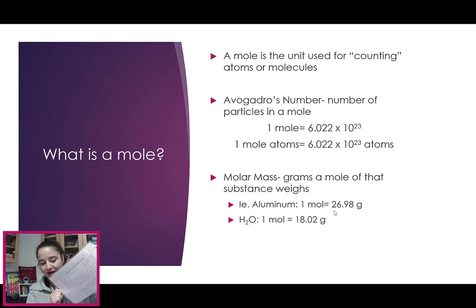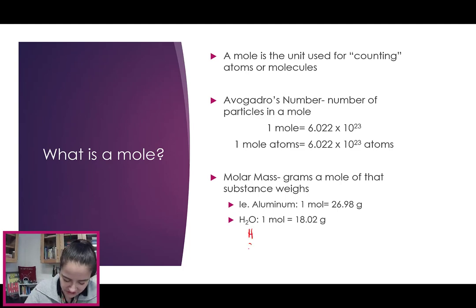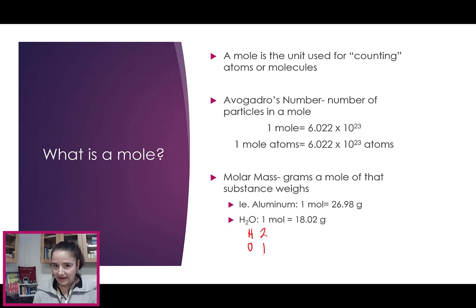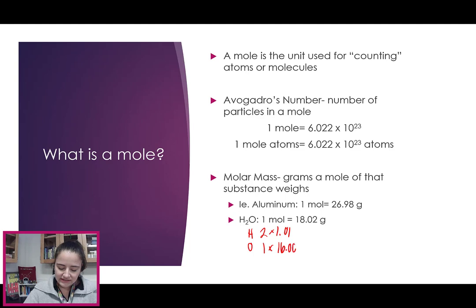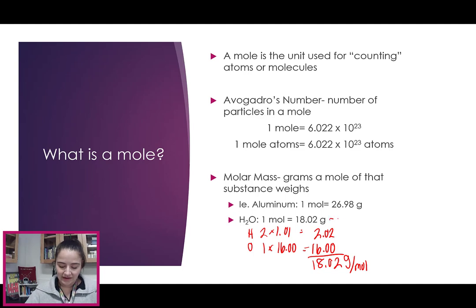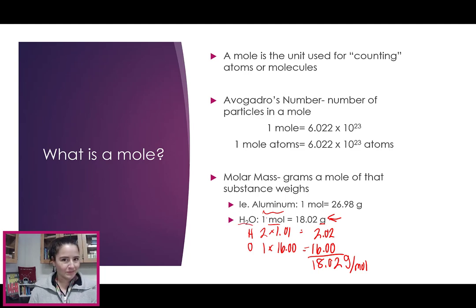How we find those is with the periodic table. For example, for H₂O, we have hydrogen and oxygen — two atoms of hydrogen, one atom of oxygen — and the masses of the atoms come from the periodic table. Hydrogen has a mass of 1.008, or about 1.01. Oxygen is 16.00, so we get 2.02 and 16, which adds up to 18.02 grams per mole, which is the molar mass. It tells us how many grams one mole of that atom or compound would weigh.